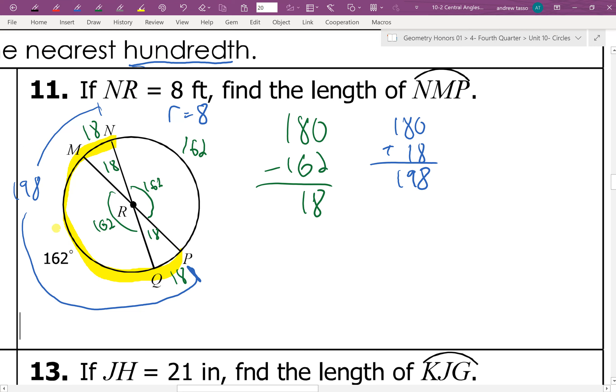You could have also added, of course, 18, 162, and 18. So now that we have the measurement for this arc,